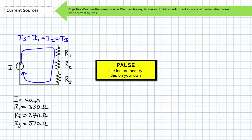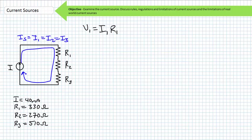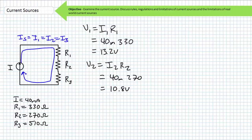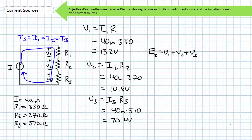Pause the lecture and solve for the voltage drop across each resistor and consider the necessary voltage rise that must be present to induce this voltage drop. Ohm's law states that the voltage drop across an element is the current through it times its resistance. Solving for V1: V1 equals I1 times R1. Substituting in the necessary values, we find V1 to be 13.2 volts. V2 equals I2 times R2. Substituting in the necessary values, we find V2 to be 10.8 volts. Using Kirchhoff's voltage law, the sum of voltage drops equals the voltage rise. The voltage rise induced by this current source must therefore be equal to V1 plus V2 plus V3. Substituting in the necessary values, we find this current source must have a voltage rise of 44.4 volts, to induce 40 milliamps of current through this series combination of three resistors.